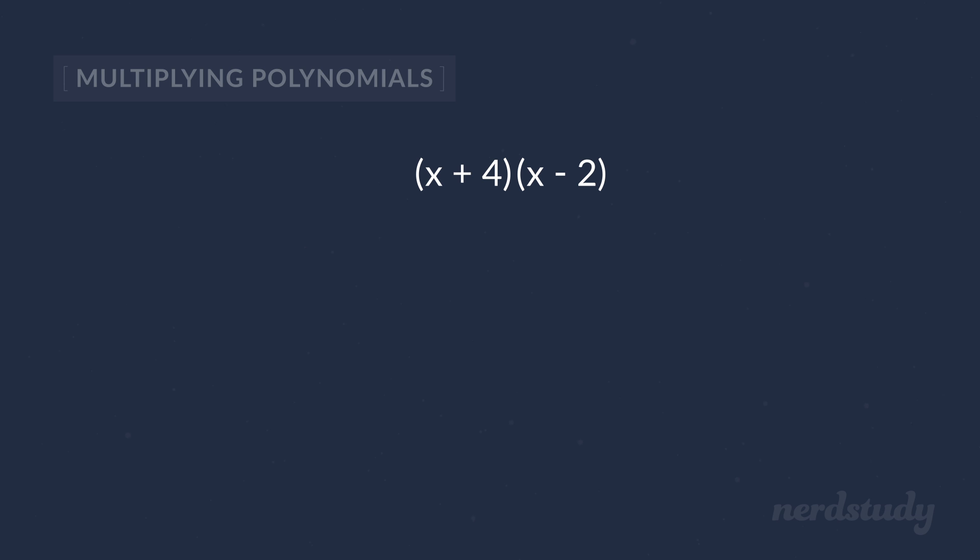So we had x plus 4 multiplied by x minus 2. And instead of using the FOIL method, we're just going to take each of the terms from the first polynomial and then multiply them to every term in the next polynomial. So this x multiplies with each term to give us x squared minus 2x.